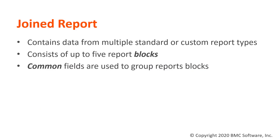A joint report basically contains data from multiple standard or custom report types. You can use up to five report blocks and each block represents an object. Across all these objects we can use common fields in order to group the blocks.